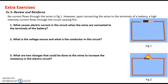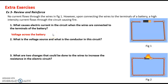Concerning what causes electric current: when we have a closed circuit in which wires are connected across the terminals of the battery, what causes the flow of current — represented by red arrows — is the voltage across the battery, the energy provided by the battery. The voltage source is the battery and the wire is the conductor.